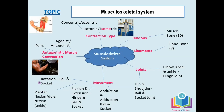Still on ball and socket: we also have rotation, which is turning a limb along its long axis. To summarise, all five movements — flexion, extension, abduction, adduction, and rotation — occur at the ball and socket joint. At a hinge joint, only flexion and extension occur.